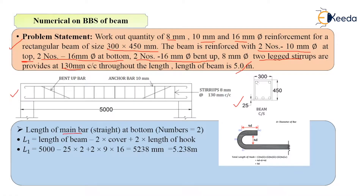First I will calculate the length of all the bars. First the length of the main bar — that is the straight bar. As you can see, there are two numbers of 16 mm diameter bars at the bottom that are straight. Let's calculate its length; I will denote it by L1. The formula is: length of beam minus two times cover plus two times length of hook.